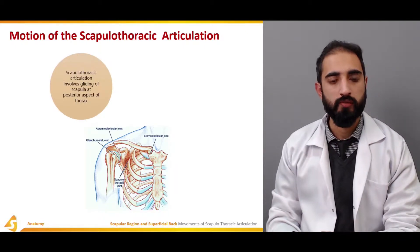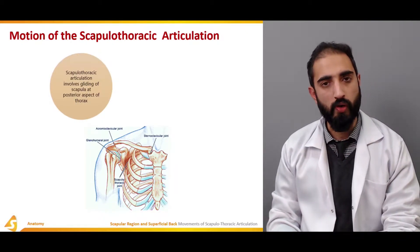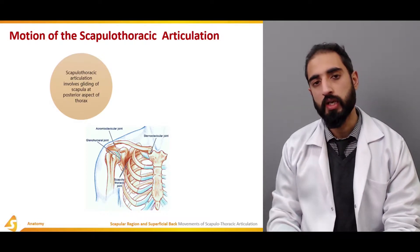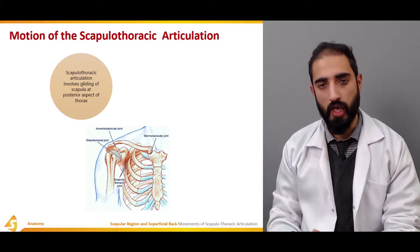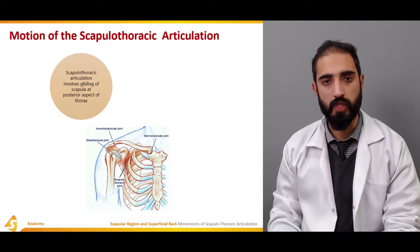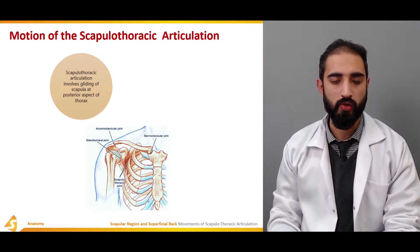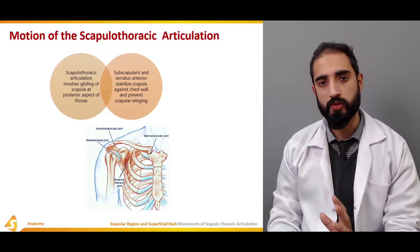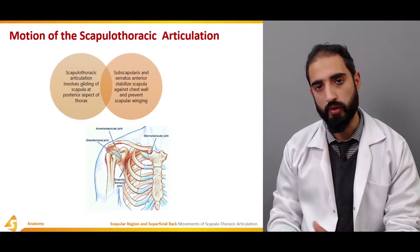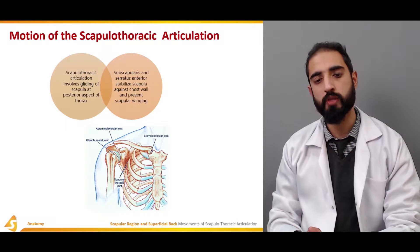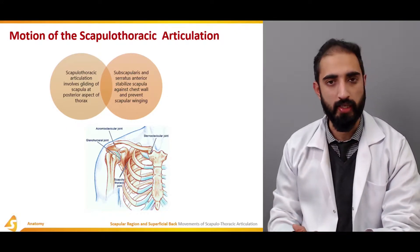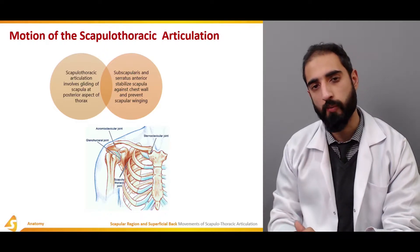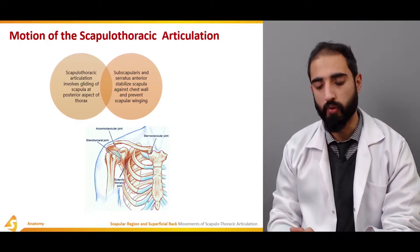The scapulothoracic articulation involves gliding of the scapula on the posterior aspect of the thorax or rib cage, where the ventral aspect of the scapula is the concave partner, whereas the dorsal aspect of the thoracic cage is the convex partner. The subscapularis and serratus anterior are two very important muscles responsible for stabilizing the scapula by giving it dynamic stability, keeping it on the chest wall, and preventing scapular winging.